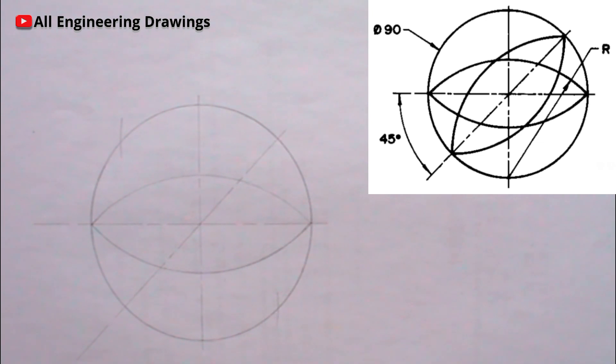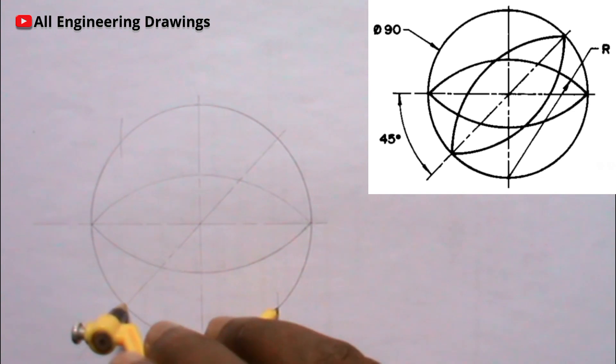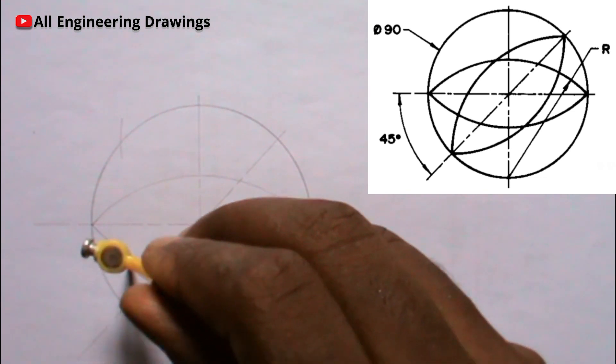The point where the arcs intersect is the center we use to produce the other arcs. So now, with the same radius, place your compass on this point, that is where they intersect. Then you can now draw the second arc.